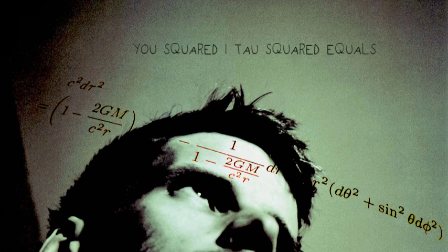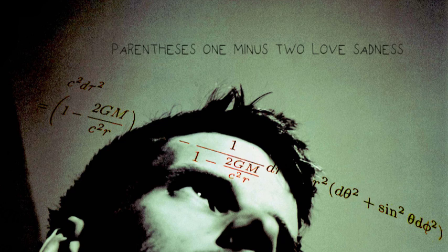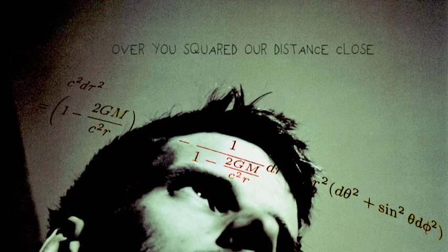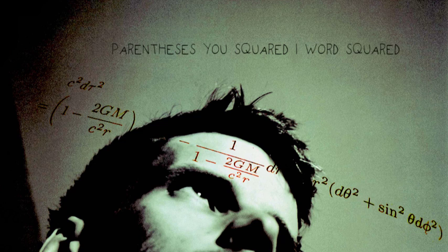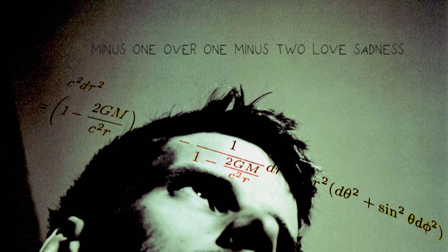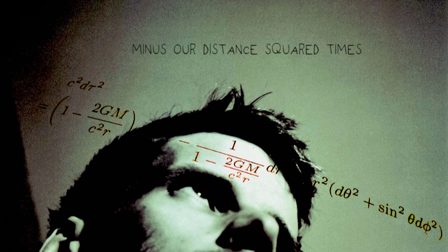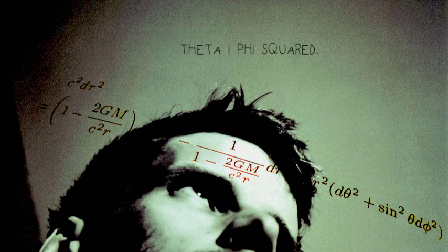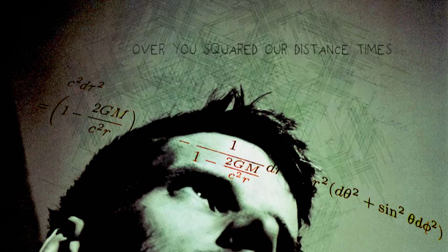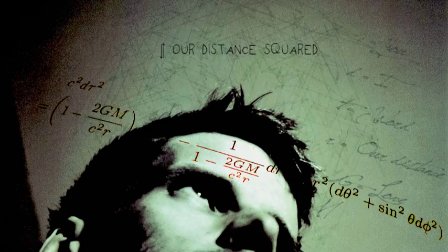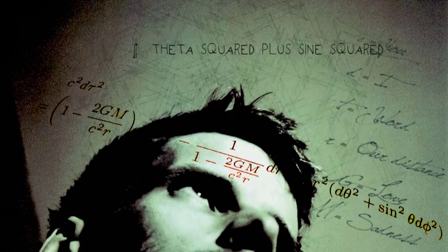E squared, i-top squared equals parentheses one minus two GM over E squared our distance close parentheses, E squared a word squared, minus one over one minus two GM over E squared our distance, times i our distance squared, minus our distance squared times i-theta squared, plus sine squared theta i-phi squared.